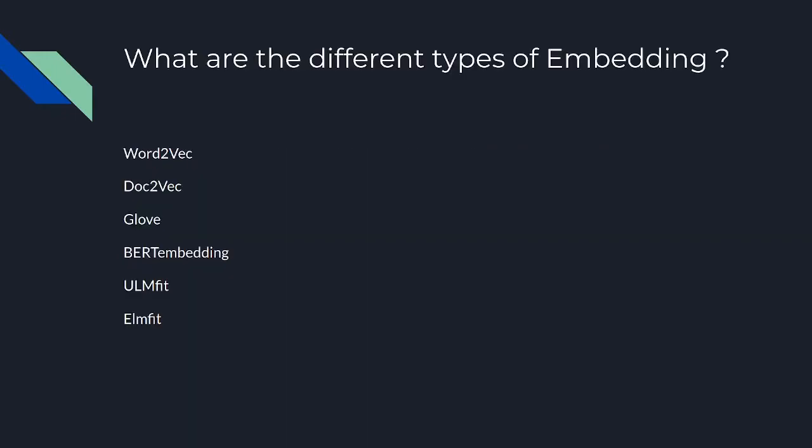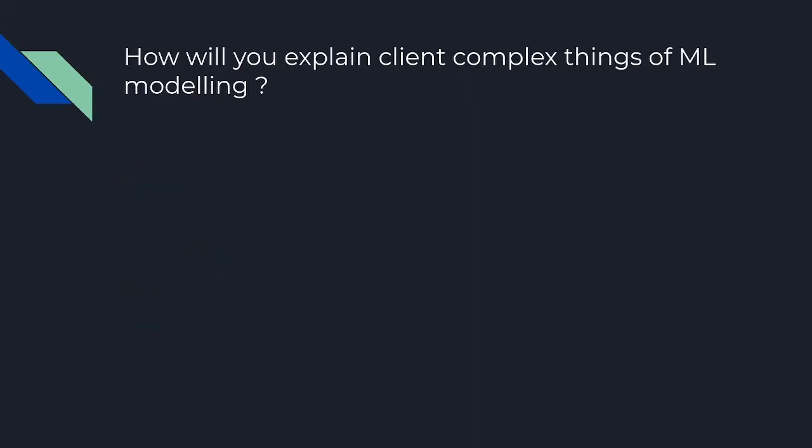What are the different types of word embeddings? The different types of embeddings include Word2Vec, Doc2Vec, GloVe, word embedding, ELMo, BERT, and others.